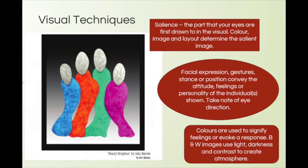So visual techniques — have a look at this example. It's obviously a modern abstract painting and it represents a family. The artist has used a number of techniques to convey that idea of family. There are no faces, no facial expression — we can sense they're human forms even though they're modern and abstract, but we still get that feeling of togetherness and drawing in. The first technique is salience — the salient object is the first thing to attract your attention, the thing your eye is drawn to.